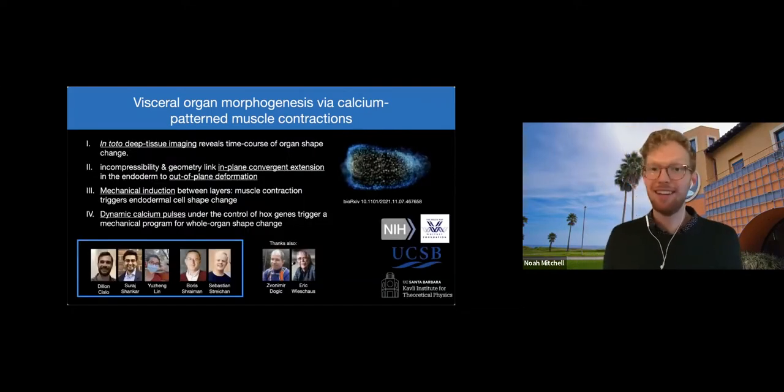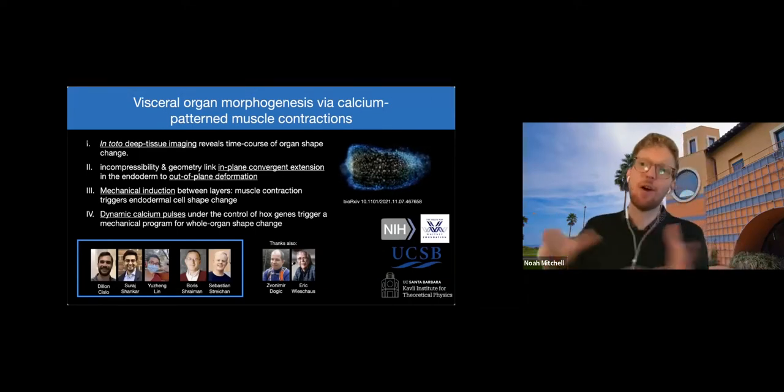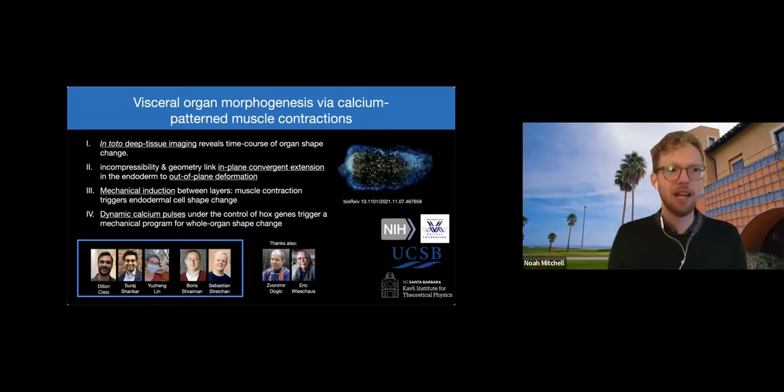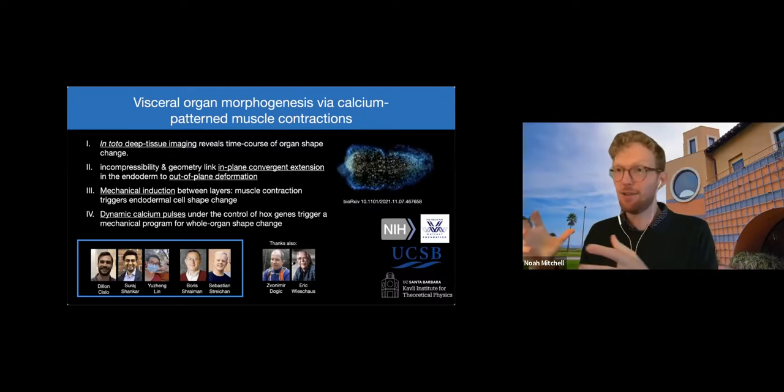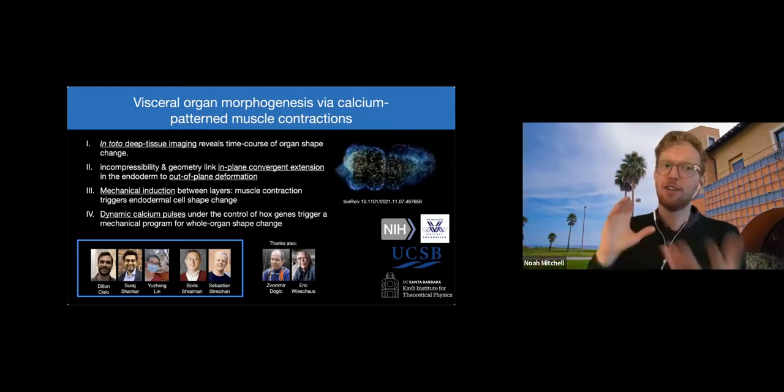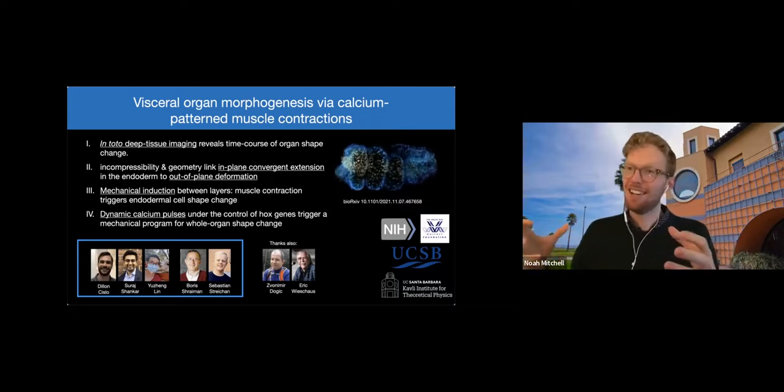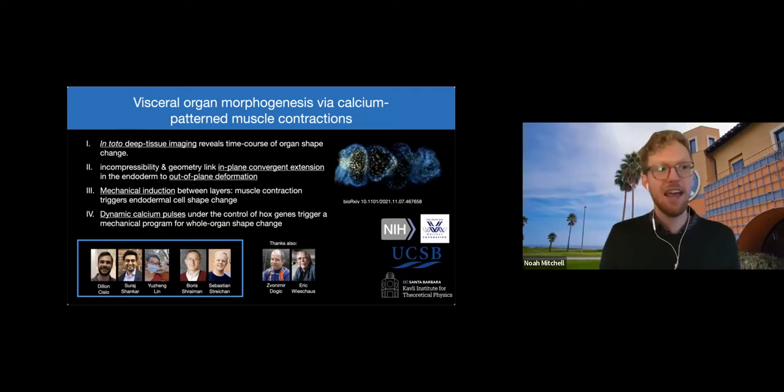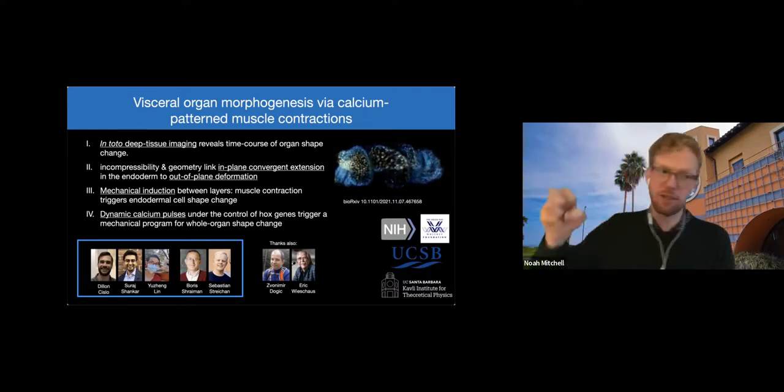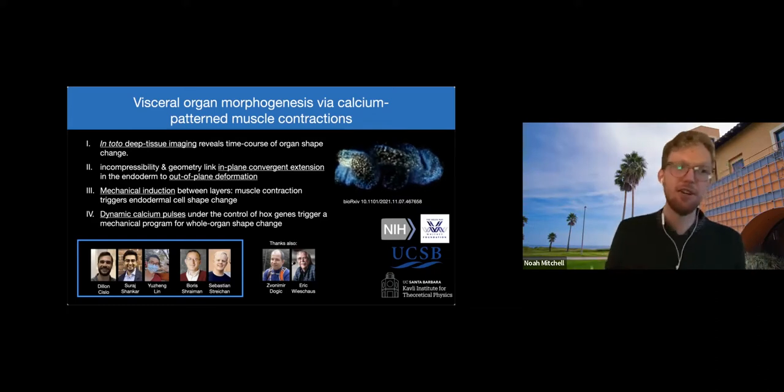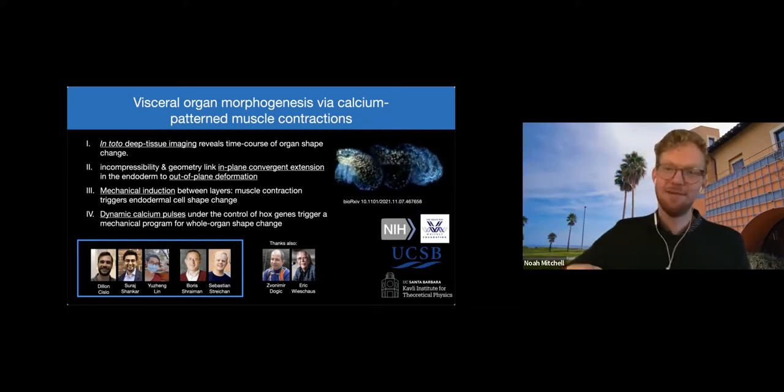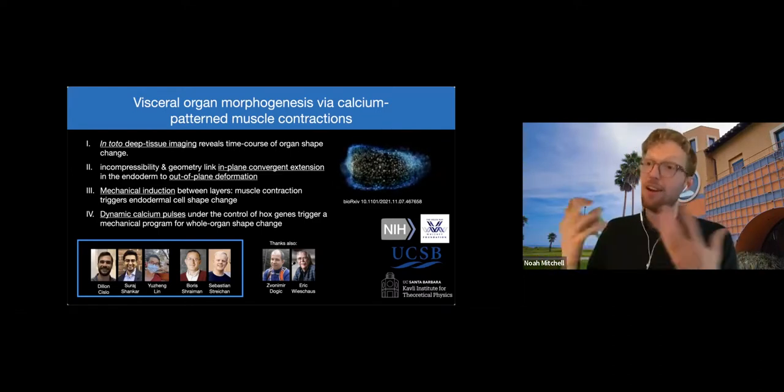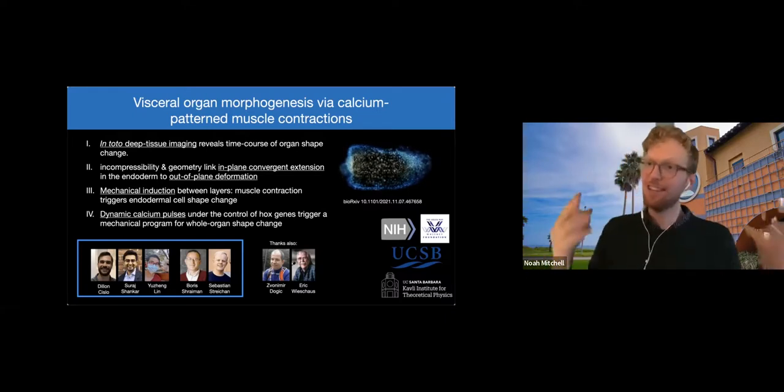Okay. So these are my conclusions, right? We've done this in toto whole organ, let's say, deep tissue imaging to really reveal the time course of organ shape change. We found that through the incompressibility of the tissue and the initial geometry, we have a link between in-plane shear deformation and out-of-plane folding. And then we have this mechanical induction between layers, that there's muscle contraction triggering the endodermal cell shape change. And this in turn is mediated by this patterned dynamics of calcium pulses that are under the control of Hox genes to generate this mechanical program.